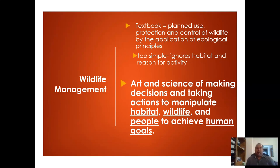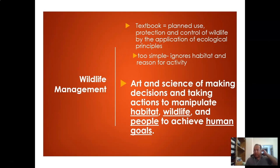I prefer the definition of wildlife management as the art and science of making decisions and taking actions to manipulate habitat, wildlife, and people to achieve human goals. We have established ourselves as the top species on this planet, so when we look at wildlife, we're looking at how it's going to affect us. We do want the ecosystem to be healthy and wildlife to be happy and sustainable, but it still has this human element — how are they going to fit into our life on this planet?